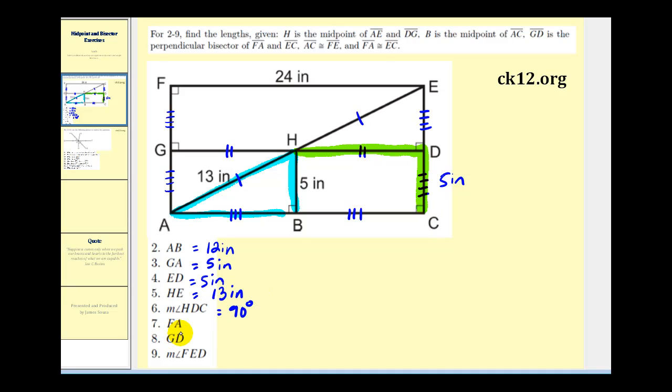Next we want the length of segment FA, and FA is the shorter side of the large rectangle. And since GA is congruent to segment HB, GA is five inches and GA is congruent to segment FG so it's also five inches, and therefore segment FA would be ten inches.